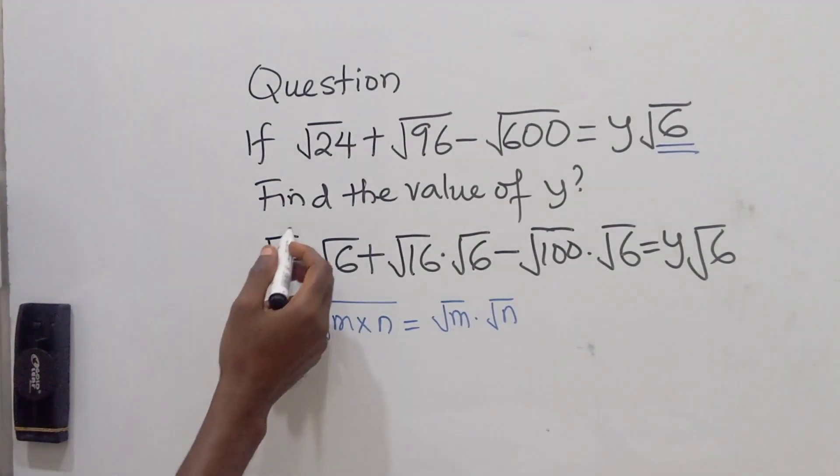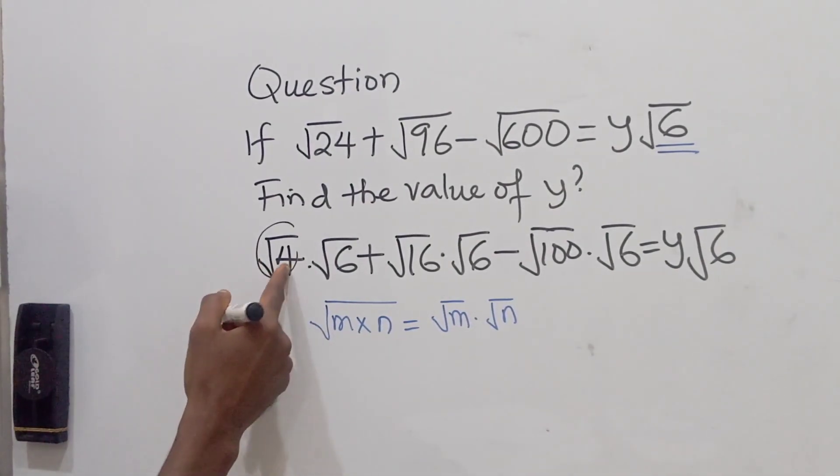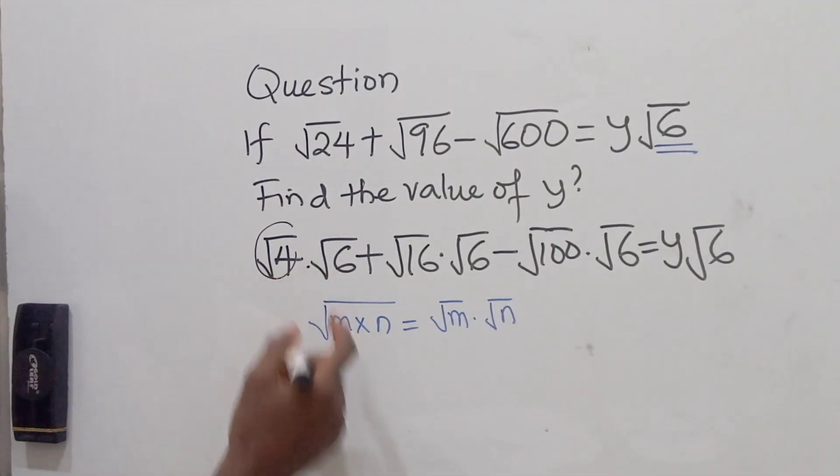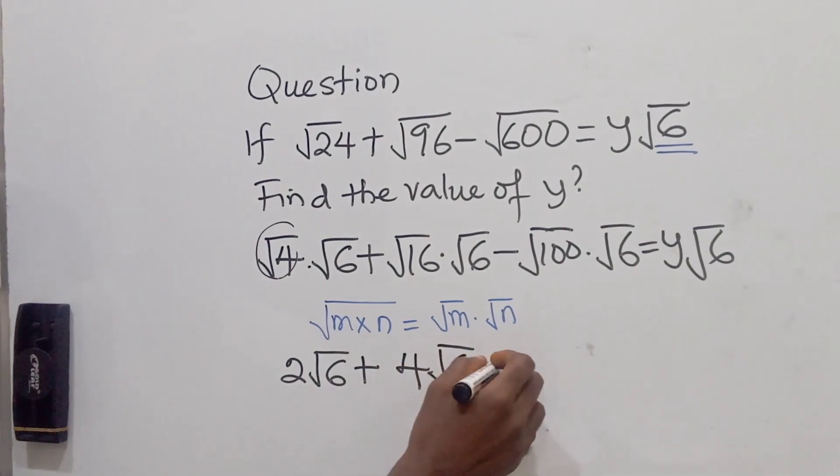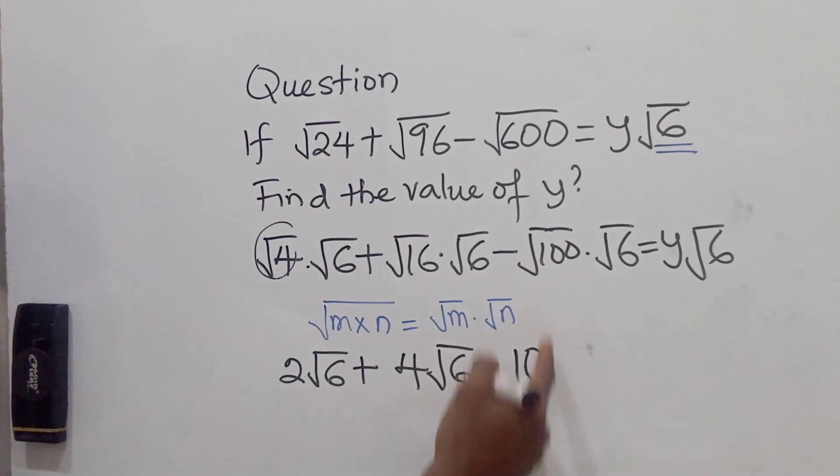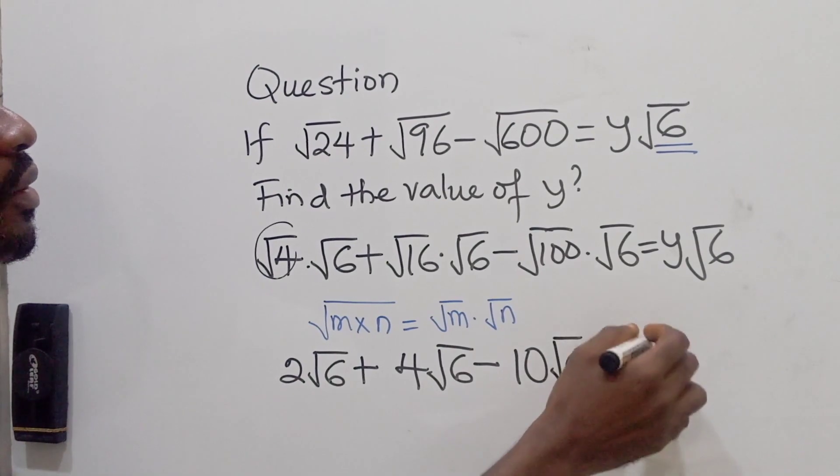Now for this, I can get the perfect number. So square root of 4 is 2, because 2 multiplied by 2 will give us 4. So this is 2 root 6. Plus square root of 16, what number multiplies itself to give us 16 is 4 root 6, minus square root of 100 is 10, because 10 times 10 will give us 100. Root 6 equals to y root 6.